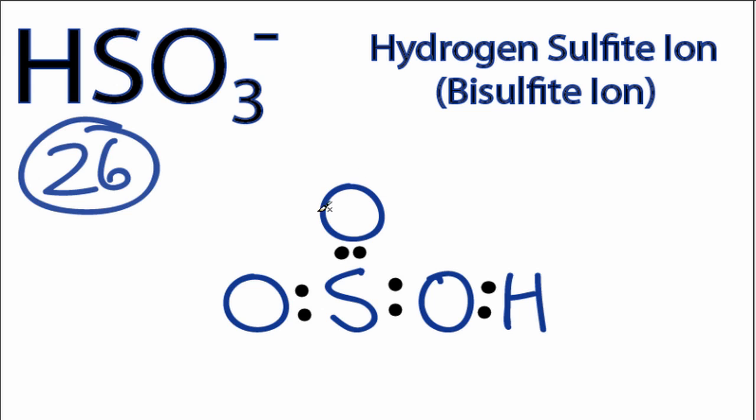and then around the oxygens to fill their octets, ten, twelve, and twenty-four. So we've used twenty-four, we have twenty-six, we'll put the last two on the central atom, the sulfur, and we've used all the valence electrons.